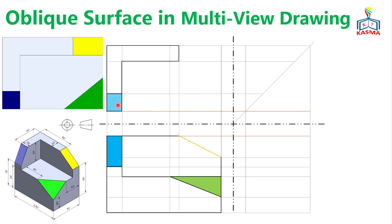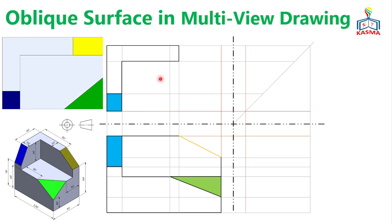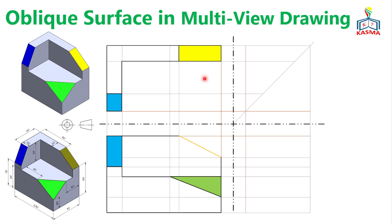For the yellow inclined surface, the same procedure applies — it projects as a rectangular layout on the top view. Connect the end portions to get the final layout. The three surfaces are now projected on the top view.